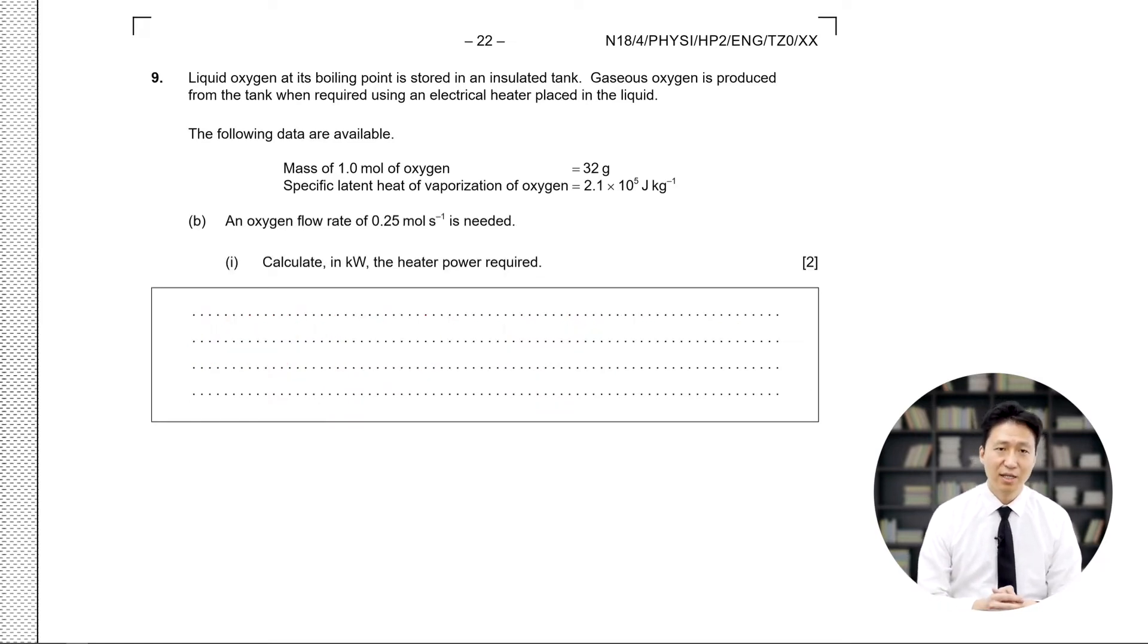Next, an oxygen flow rate of 0.25 mol per second is needed. Therefore, calculate in kilowatts the heater power required. So first step, we have to change this from moles into grams. You can see that 0.25 moles is 8 grams because it is given that 1 mole is 32 grams.